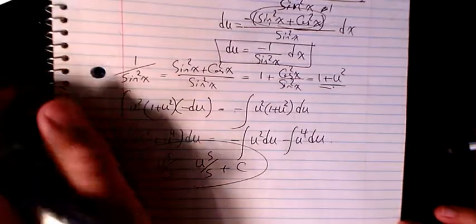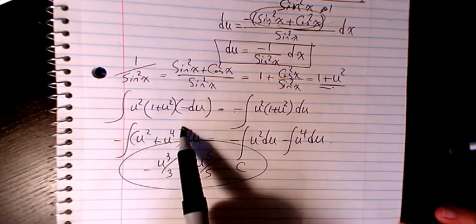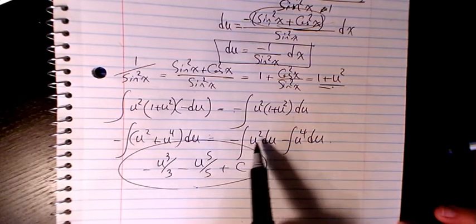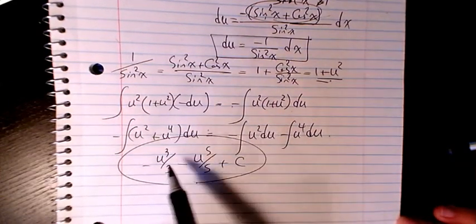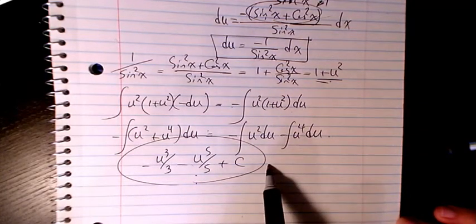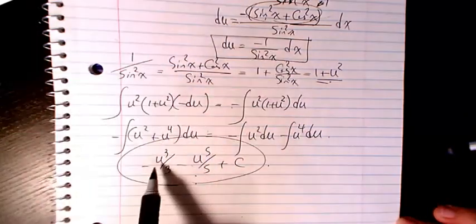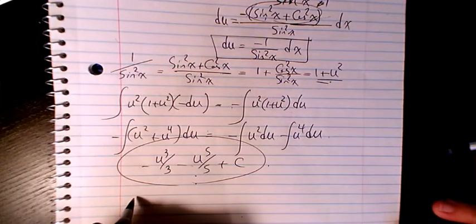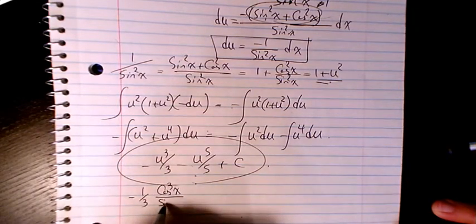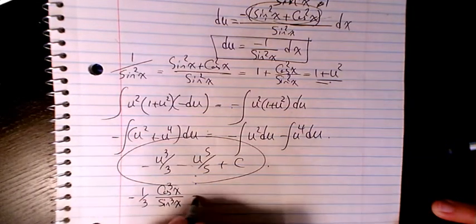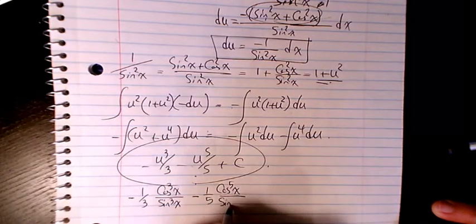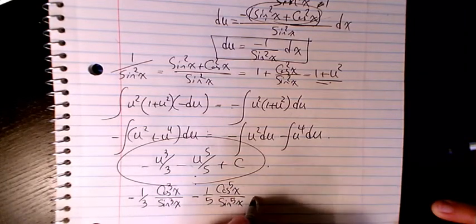Distributing gives u squared plus u to the power of four du. After integration it is negative u cubed divided by three minus u to the power of five divided by five plus C. Since u is cosine divided by sine, the final answer is negative one-third times cosine cubed x divided by sine cubed x, minus one-fifth times cosine to the power of five x divided by sine to the power of five x, plus C.